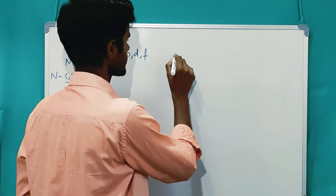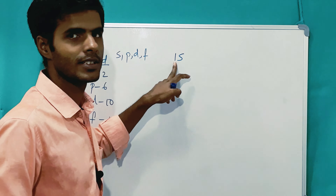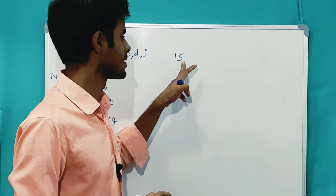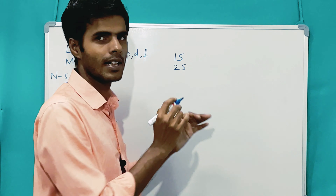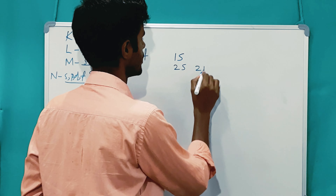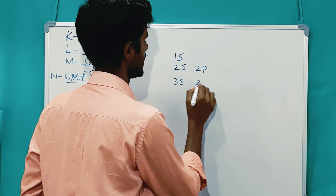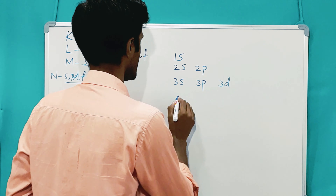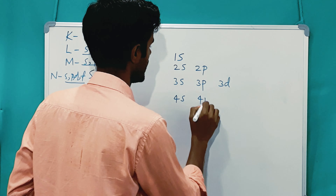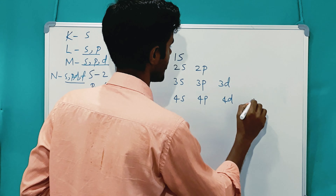We arrange electrons in the increasing order of their energy. To find which subshell has the least energy, we use a notation: 1S means the first shell with the S subshell; 2S is next; then 2P; then 3S and 3P. In the third shell we also have the D subshell, so we have 3D. Then 4S, 4P, 4D.